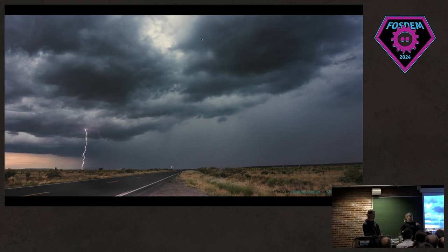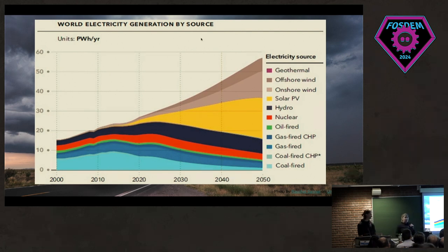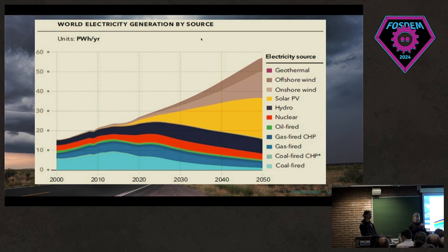Why is solar forecasting important? The weather is unpredictable — the sun doesn't always shine, the wind doesn't always blow. Moving into the future, our power generation is going to be dependent on weather-dependent energy sources like solar and wind. By 2050, about 75% of the world's primary energy source is going to be based on renewable resources. Gas and coal are called dispatchable resources — you can burn X amount of coal and get X amount of electricity — but you don't have that predictability with solar or wind, and that's where our predictions come in.